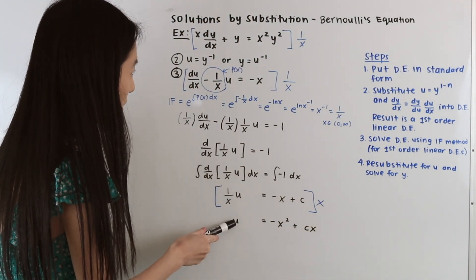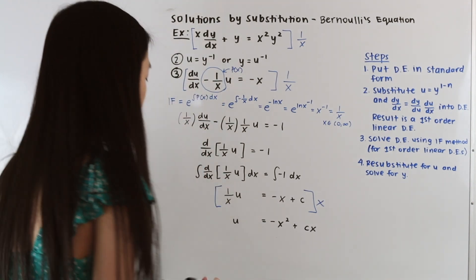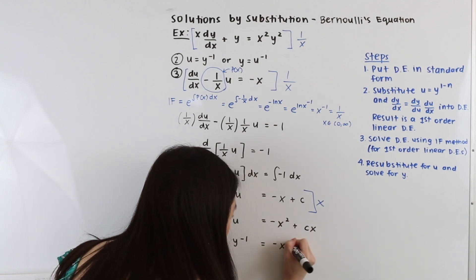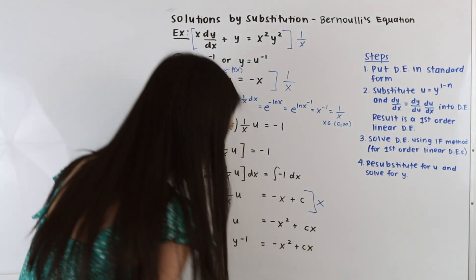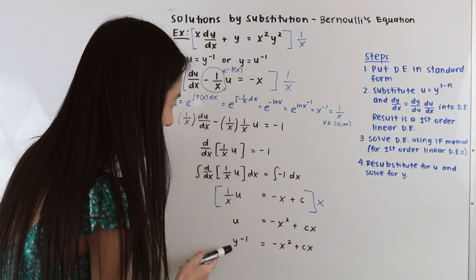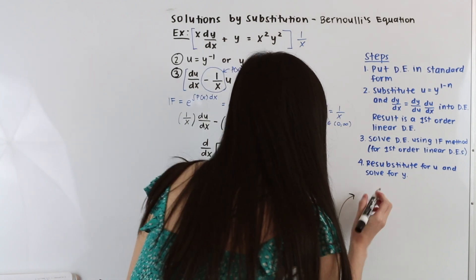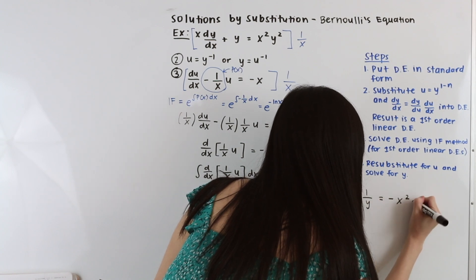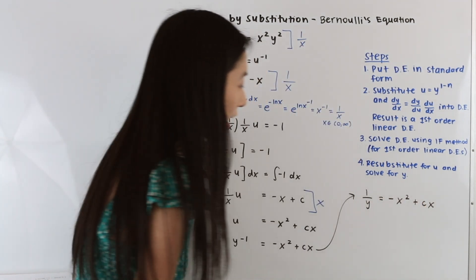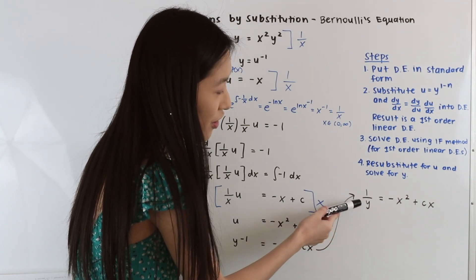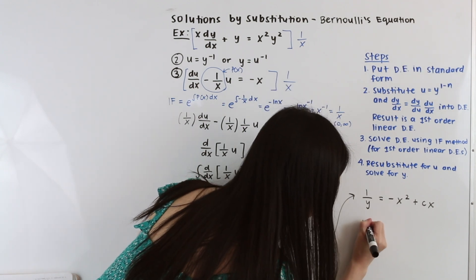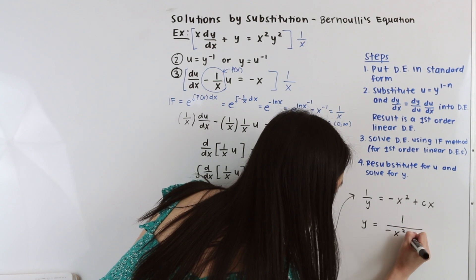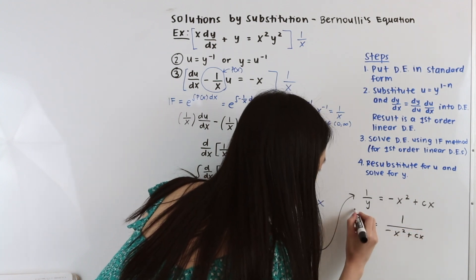Now let's re-substitute for u. Since u = y^(−1), we have y^(−1) = −x² + Cx. We can rewrite y^(−1) as 1/y. Taking the reciprocal of both sides, we get y = 1/(−x² + Cx). And that is our final answer.